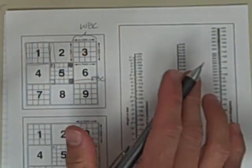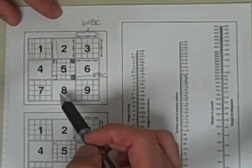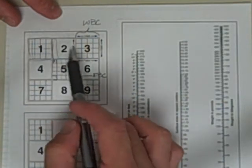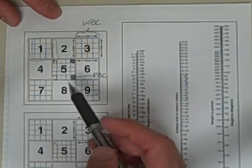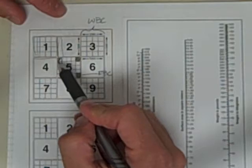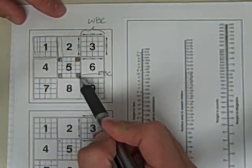So depending on how many cells we have in this hemocytometer, we might count all nine of these white blood cell squares, we might just count the four corner white blood cell squares, or we may have so many cells in here that it would only make sense to count a few of the red cell squares in the middle.